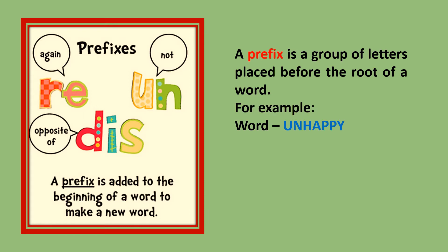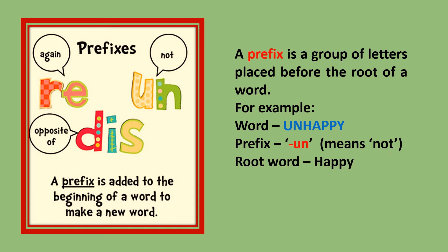For example, the word 'unhappy' — 'un' means 'not', which is the prefix, and the root word is 'happy'. Prefixes make opposites or antonyms. For example, 'happy' becomes 'unhappy', and 'satisfied' becomes 'dissatisfied'.